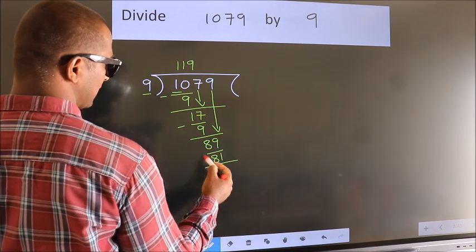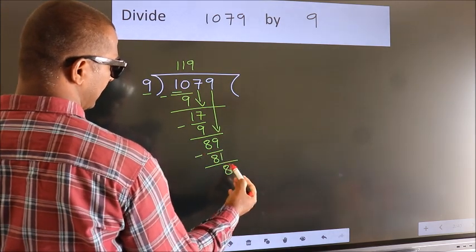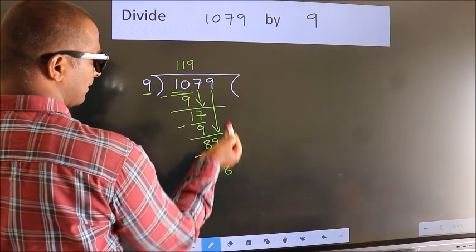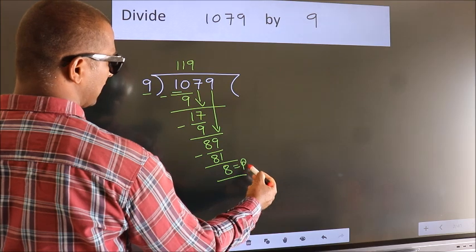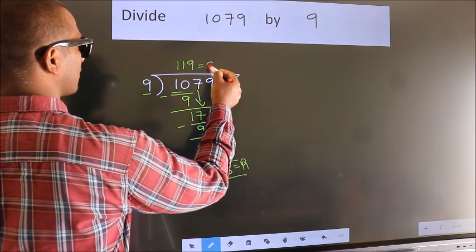Now we subtract. We get 8. No more numbers to bring it down, so we stop here. This is our remainder. This is our quotient.